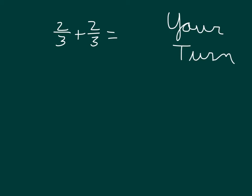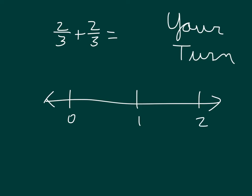Go ahead and use a number line to solve this problem. Be sure to express your answer in simplest form as a mixed number. Pause the video. Did you start with a number line? We started with zero, then we have one, and we also have two. It says three in the denominator, which means we are working with thirds, so you should have divided your number line into three parts in between each of those whole numbers.